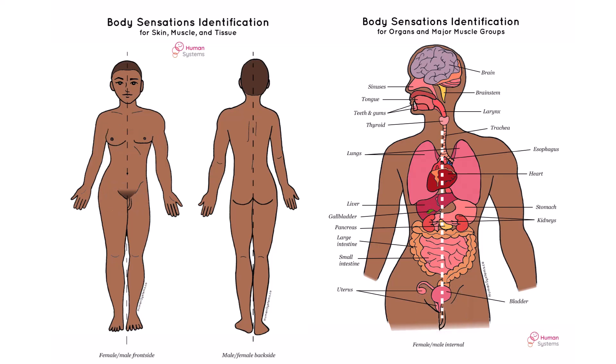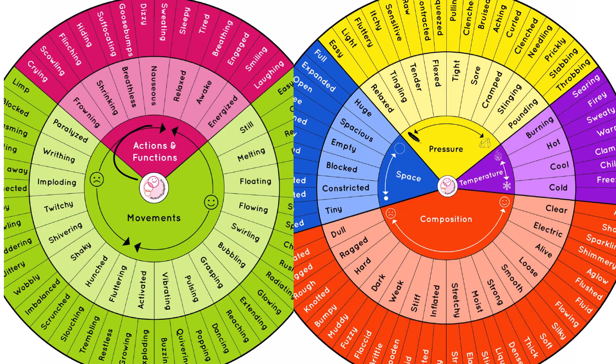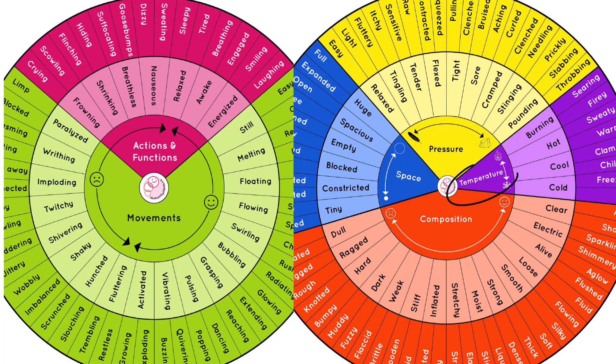In addition, these areas of our bodies are some of the most sensitive, both physically and psychologically, so it's important to include them. A unique research method was used to collect and categorize body sensations into six areas on two wheels: actions and functions, movements, space, pressure, temperature, and composition.